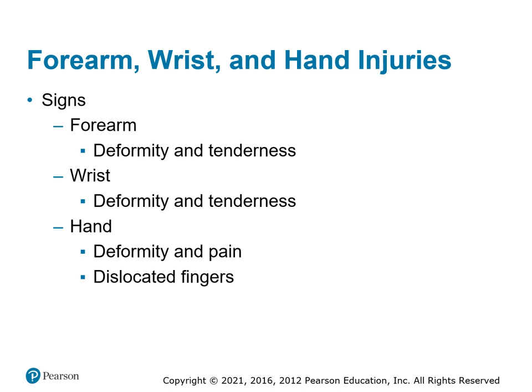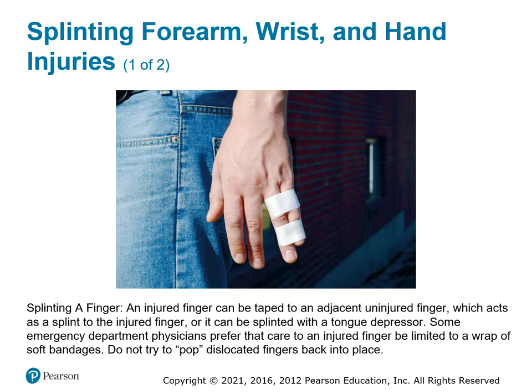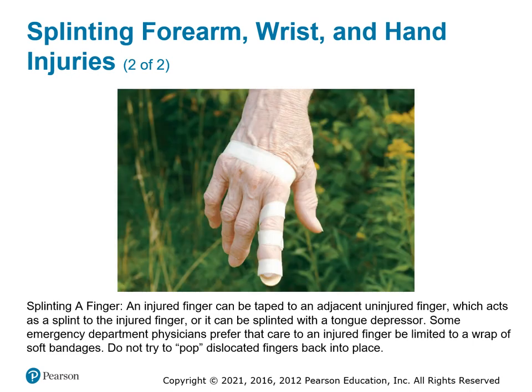Wrist and hand injuries are very similar to what we're doing with the legs. You're going to have deformity and tenderness, maybe dislocated fingers. Splint them the way you find them. Wrap a finger to a finger. Try to take care of your patient to keep it from moving around. There's a single finger splint option as well.